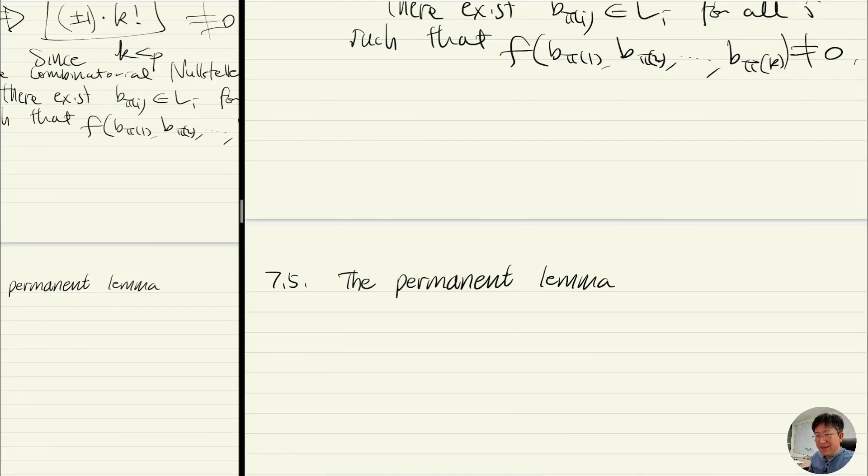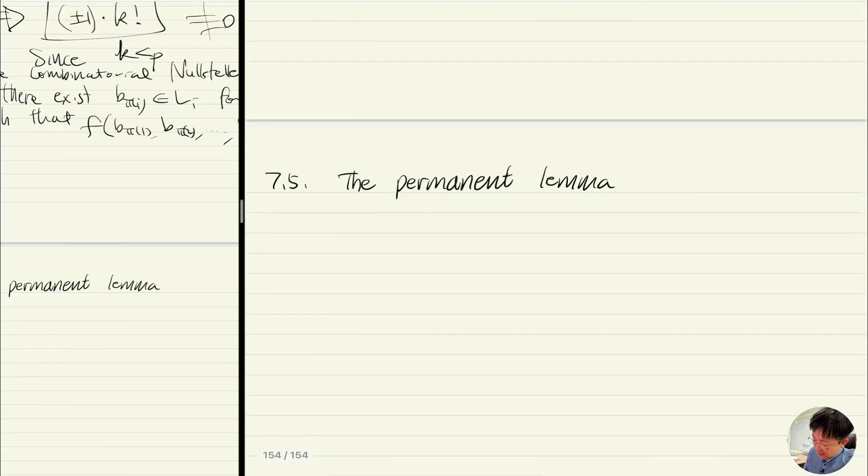Okay, our next topic is an application of combinatorial arguments to prove something called the permanent lemma. So here's a theorem, it is called the permanent lemma.